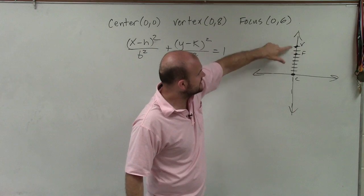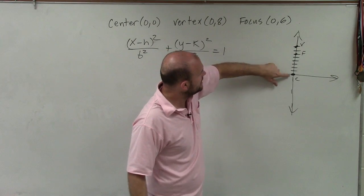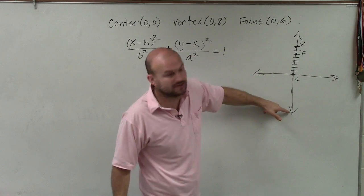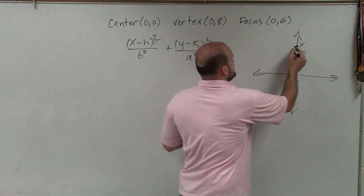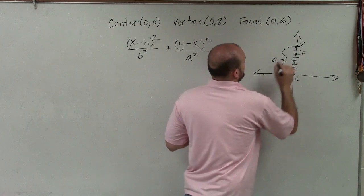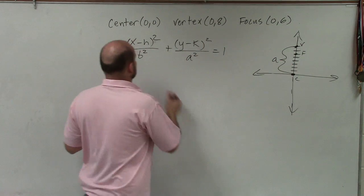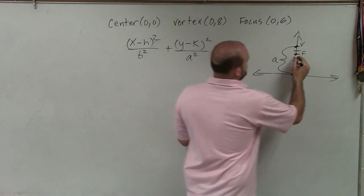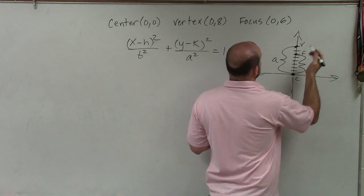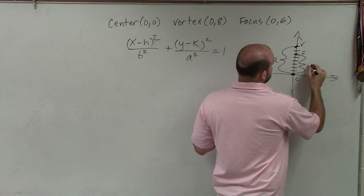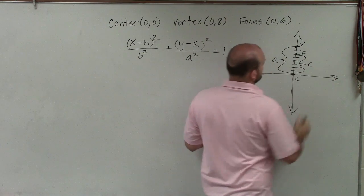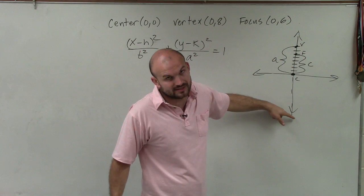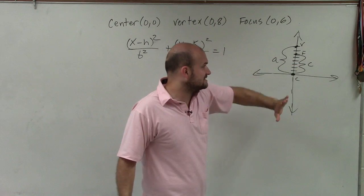Well, remember, the center splits your two vertices. So if I'm going up 8 to get to this vertex, I can go down 8 to find the other vertex. But all I really care about is this distance, which is a. And that distance is 8. So we'll get to that in a little bit. But we do know that the distance from one of the foci is going to be c. And we know that distance. That distance is going to be 6.